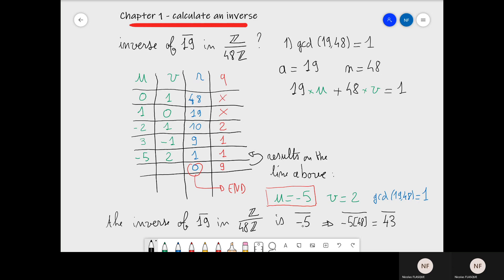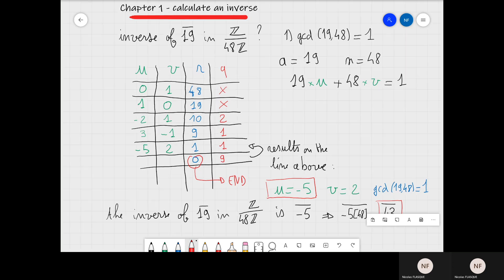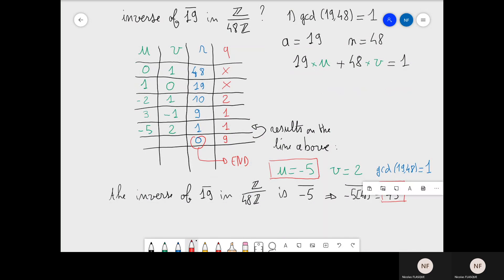From a number, you can add or subtract 48 as many times as you want in order to reach a value between 0 and 47. Writing the inverse as minus 5 bar would be okay, but please remember that all final results should be between 0 and n minus 1.